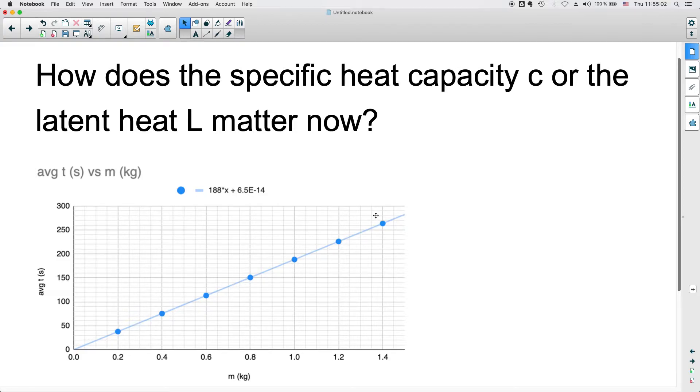What I did here is what I suggested to you in the last video - I included the equation. So this is the equation here of the trend line. What this means is basically here you see it says average t. So average t is equal to 188, well this x is actually the mass, so times the mass m plus, and this cryptic part here means plus 6.5 times 10 to the power of negative 14. So it's a ridiculously small y-intercept.